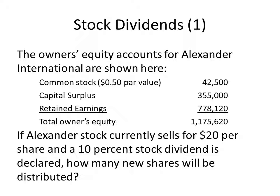Now we will talk about stock dividends. We have the owner's equity accounts for Alexander International. The value of common stock is found in two accounts: the common stock at par account and the capital surplus account. Every share has a par value recorded in the common stock account, but we almost always sell stock for more than par value — that extra amount goes into the capital surplus account. Retained earnings represents the undistributed income of the firm over its life — net income not paid out as dividends. Adding all these together gives us total owner's equity.